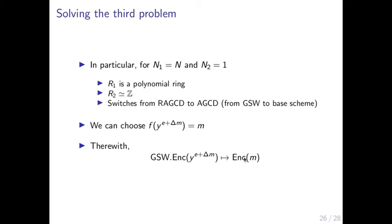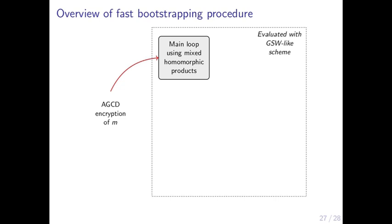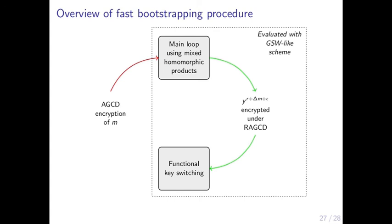This means we take a ciphertext of the GSW scheme and produce a ciphertext of the base scheme. Since we know bounds on e and that delta is larger than e, we can easily choose f such that f(y^e · y^(delta·m)) = m. Putting it all together, the functional key switching procedure switches from a GSW encryption of a power of y to a base scheme encryption of m. This encryption does not depend on e, so the original large noise is removed, and the new noise is only slightly larger than the small GSW encryption noise.